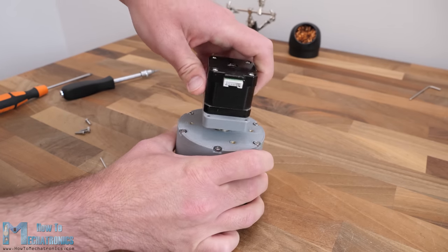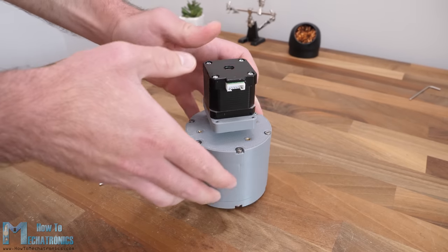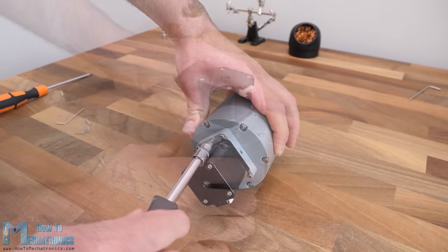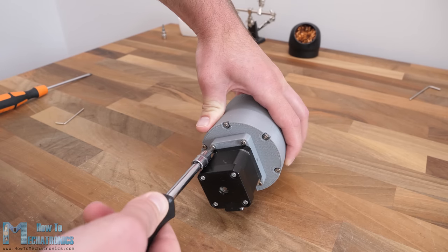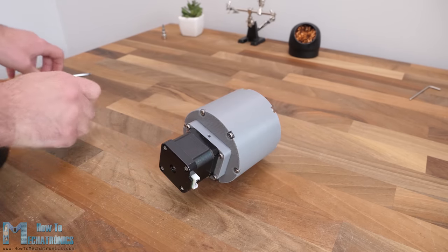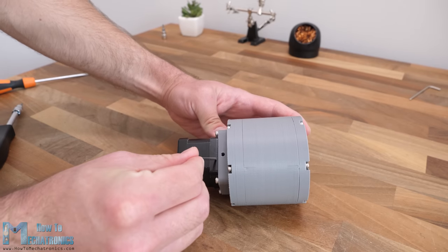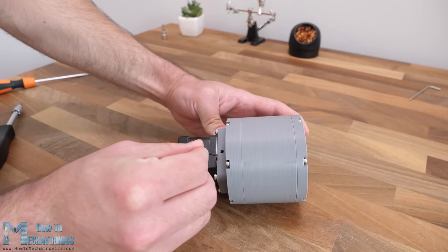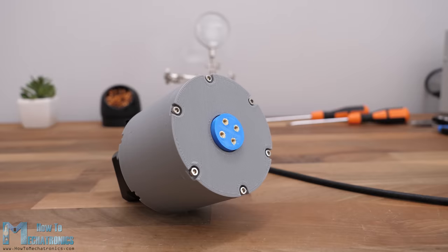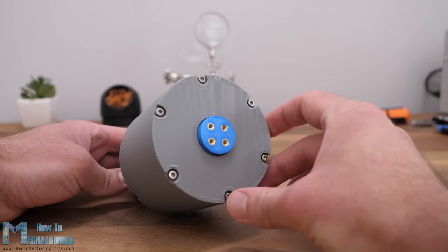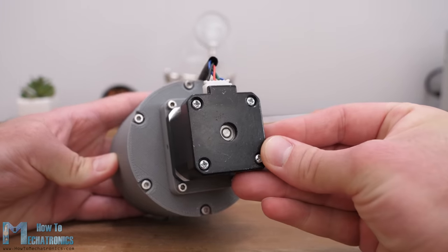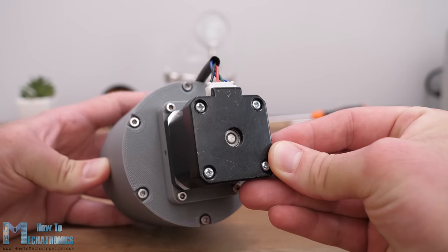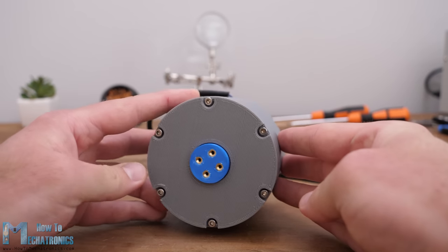Then we can simply slide in the stepper motor shaft into the gearbox input shaft and secure the mounting plate to the gearbox with 4 M3 bolts. On the side of the mounting plate there is a hole through which we can tighten the motor shaft to the input shaft with the grub screw. And that's it. Our 3D printed planetary gearbox is now completed. The output shaft rotates 16 times slower than the input of the motor and it does that quite smoothly.